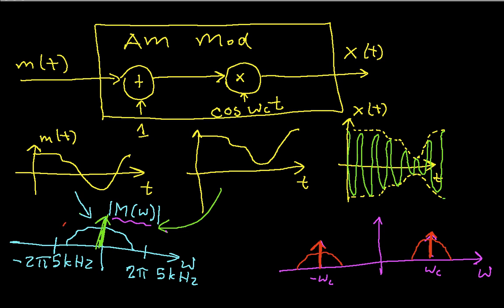Again, what's happened is I've taken two copies of this spectrum. One goes out here, and the other goes out here. This is oftentimes called the modulation property of the Fourier transform.